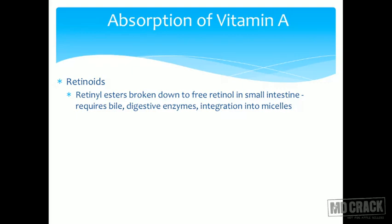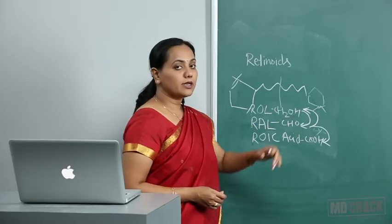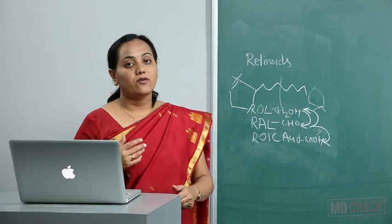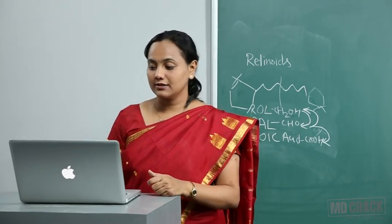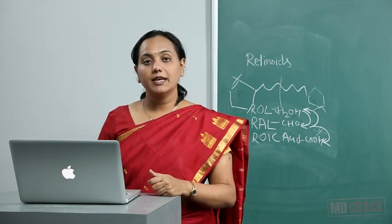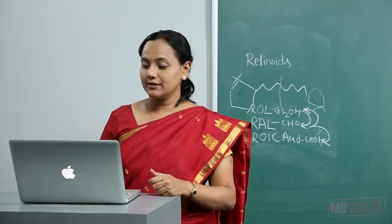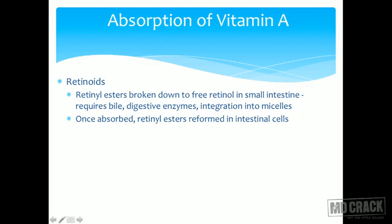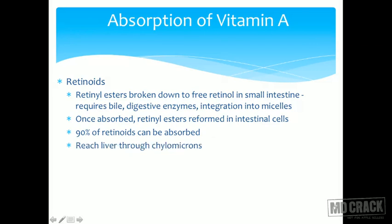If retinol is in alcoholic form, it can form an ester with a fatty acid — these are called retinol esters. After digestion and integration into micelles, once absorbed, retinol esters are reformed within the intestinal cell. 90% of the retinoids can be absorbed. They reach the liver through chylomicrons, which do not enter the portal blood but instead enter the lymphatic circulation.